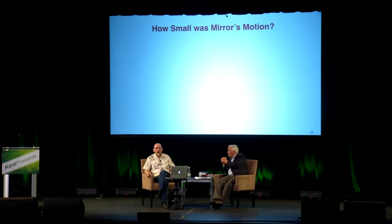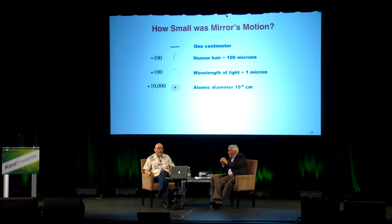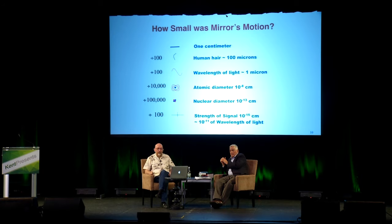Just how small was the mirror's motion? Even for physicists, I like to go through this. Begin with one centimeter. Divide it by 100 — you get the thickness of a human hair. Divide by 100 again — you get the wavelength of the light we're using to make these measurements. Divide by 10,000 — you get the diameter of an atom. Divide by 100,000 — you get the diameter of the nucleus of an atom, or of a proton. Divide by 100 again, and that's what LIGO saw.